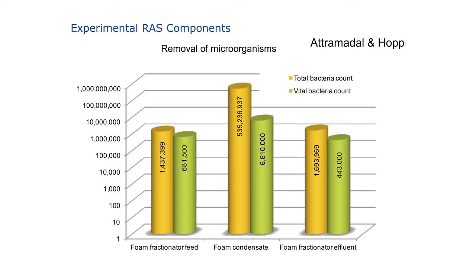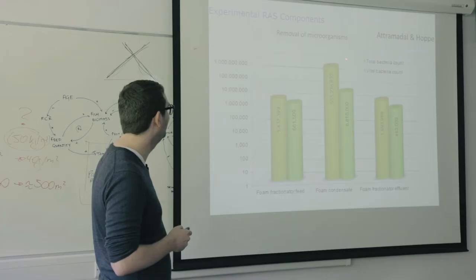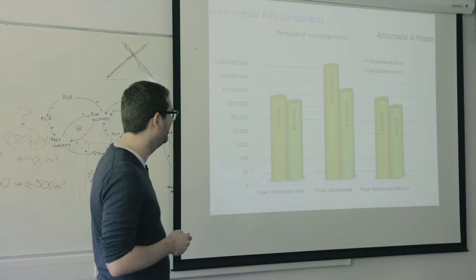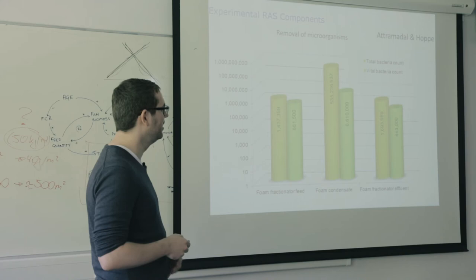Microscreen drum filtration removes everything above 30 microns and the flotation removes every particle beneath 30 microns. This is important — flotation also removes bacteria. You have to look at this logarithmically. If we have one million bacteria per gram in the influent water, the foam itself had one billion — heavily enriched. And from one billion in the flotate, just 10 million were active; the other bacteria were inactivated.